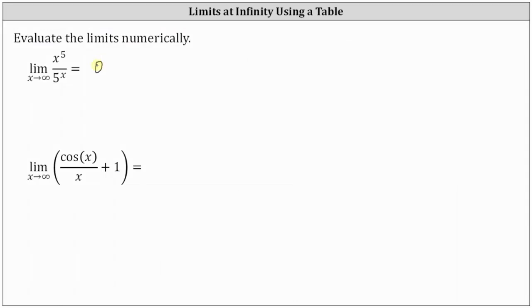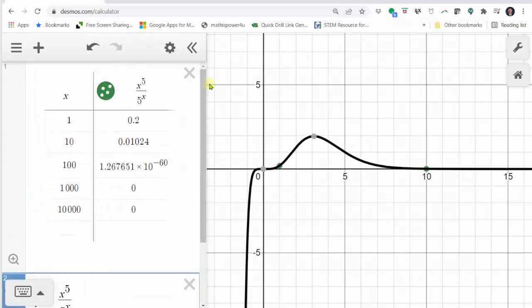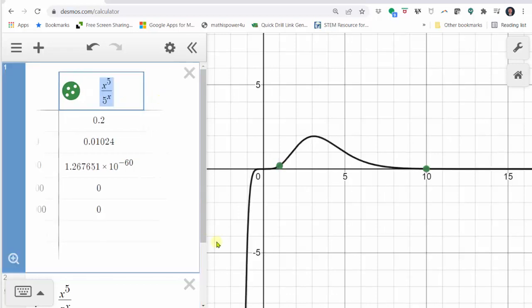Next, we have the limit of cosine x divided by x plus one as x approaches infinity. So going back to Desmos, let's go back up to the top of the table in column two and change the function.